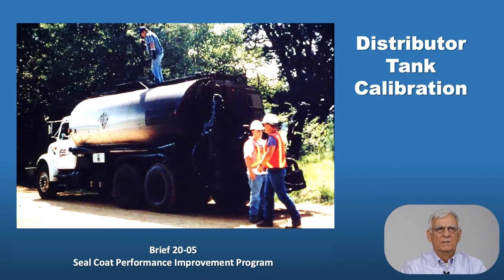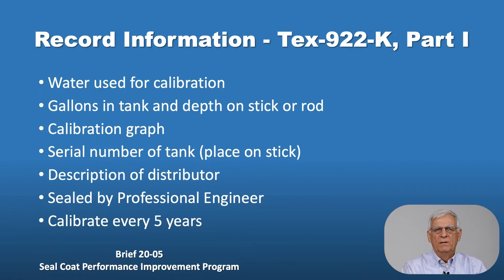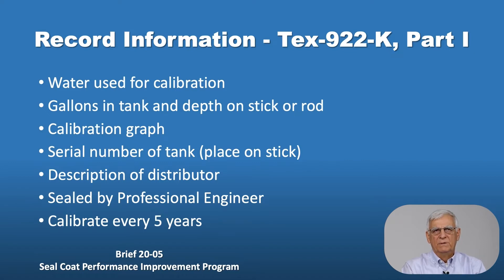The tank calibration method uses water: a known amount of water is put into the tank and the depth is recorded, then additional water is introduced and the depth recorded again. This is continued to build a calibration graph giving tank volume for a certain depth of water. The serial number on the tank must be placed on the calibration stick, the description of the distributor is provided, it must be sealed by a professional engineer, and calibration is required every five years.